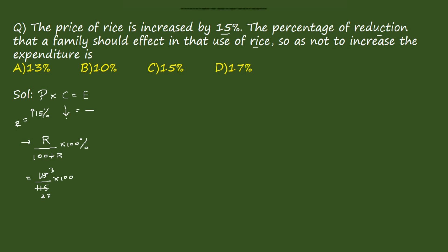15/115 simplifies: dividing by 23 gives 300/23. Performing the division: 300 ÷ 23 gives approximately 13.04, which is approximately equal to 13 percent. So the answer is option A.